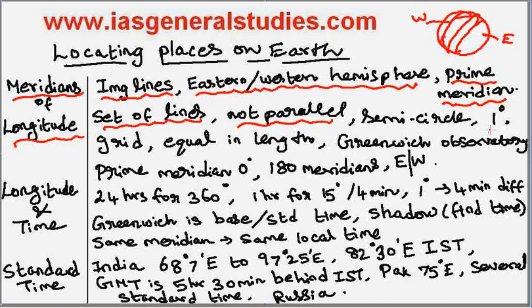All the lines are present at a gap of 1 degree. The longitude as well as the latitude lines together form the grid, making it easy to locate any position on Earth. All these Meridians of Longitude are equal in length.